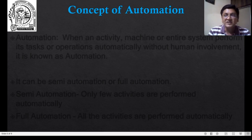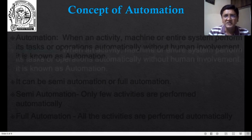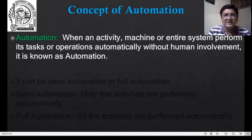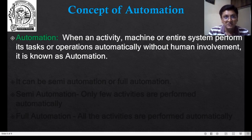When I say automation, the very basic understanding is: when an activity, machine, or entire system performs its tasks or operations automatically without human involvement, it is known as automation. Automatic operations without human involvement is the main idea behind automation.